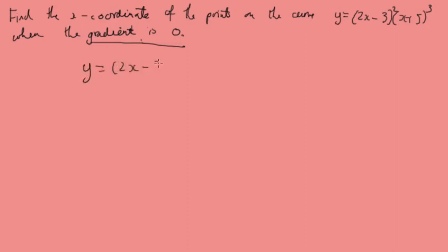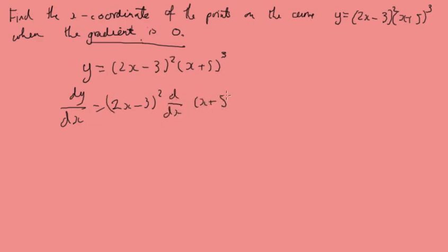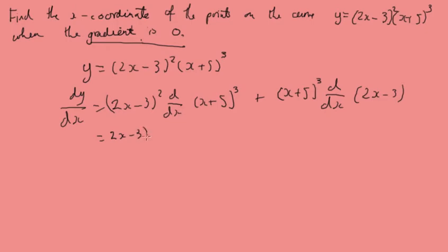We write our function down and use the product rule: the first function multiplied by the derivative of the second function, plus the second function multiplied by the derivative of the first. Applying the chain rule, we get 3 coming down, giving (x plus 5) squared — and the derivative of the middle bit is just 1.